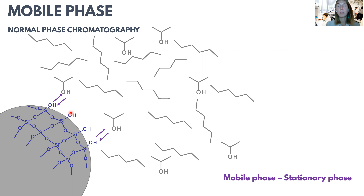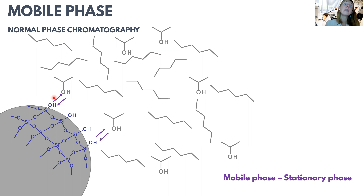Usually one of the solvents is very non-polar — for example hexane or n-hexane is very common — and another component has slightly more polarity, so for example isopropanol or acetonitrile can be used. This polar part of the mobile phase is also able to interact with the silenol groups available on the stationary phase. So isopropanol, for example, is interacting with the silenol groups on the stationary phase, and therefore another important interaction in normal phase is the interaction between the mobile phase and the stationary phase.